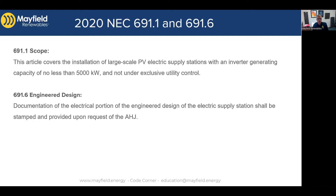Let's talk about the scope. Article 691, like every other article within NEC, has a scope. You see that language here on the screen. It says that this article covers installation of large scale PV systems with an inverter generating capacity of over 5000 kilowatts, and not under the exclusive control of the utility. The 5000 kilowatts is the same as five megawatts — not a huge system really anymore these days, but it is a large system.